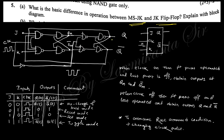In the master-slave configuration, the clock is connected directly to the master and the inverted clock is connected to the slave. This means when the master is operating, the slave is not, and when the slave is operating, the master is not. This alternating operation gives you a race-around-condition-free output. This is the diagram of the master-slave JK flip-flop.